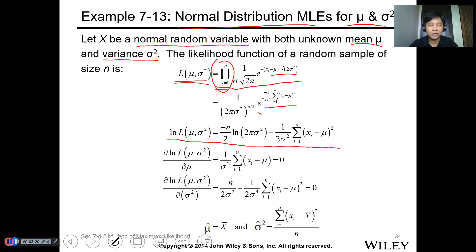Getting the ln for both expressions, we have this function. The ln of L as a function of mu and sigma squared equals... This one is a product. By ln, it becomes negative. So after this one, since we have two variables, we can have partial differentiation. The first one is partial differentiation with respect to mean mu, and the second one is partial differentiation with respect to variance.